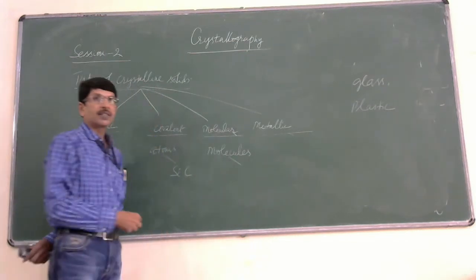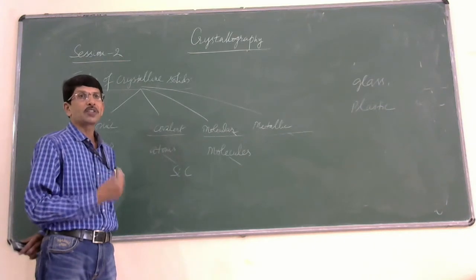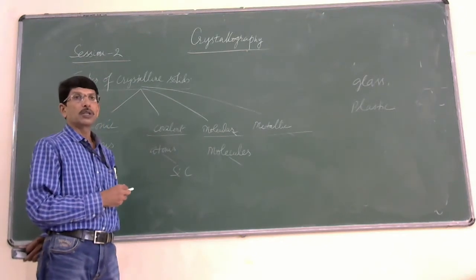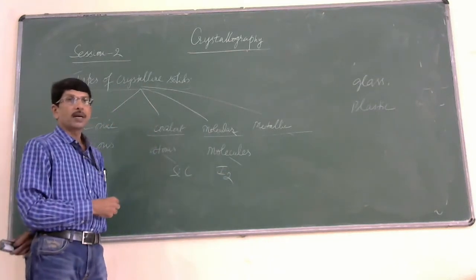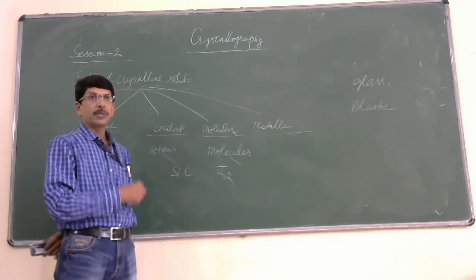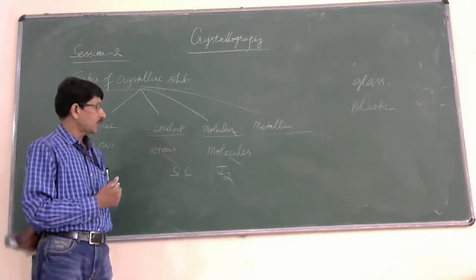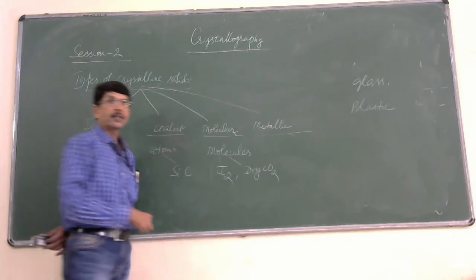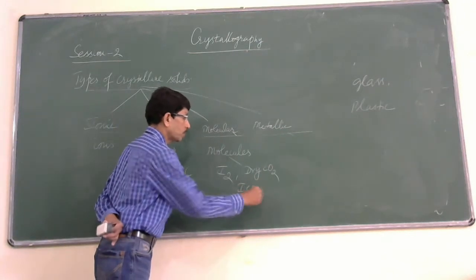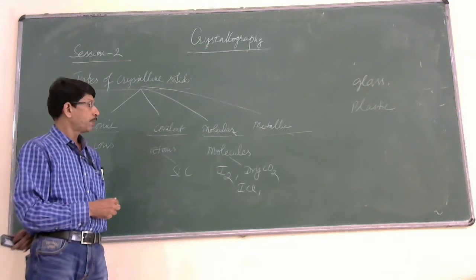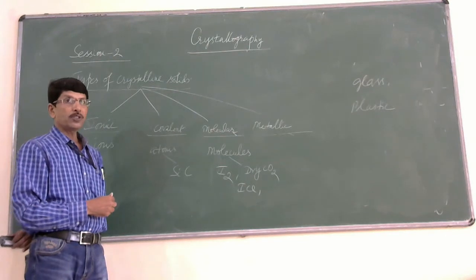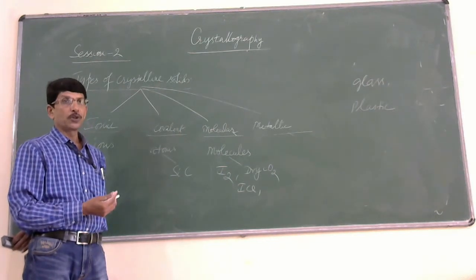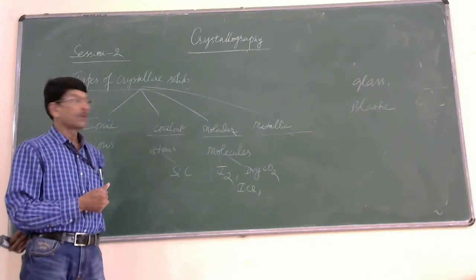The third category of crystalline solids are molecular crystals or molecular solids. As the name itself indicates, the constituent particles of molecular solids are molecules. A simple example is iodine — iodine is the only halogen present in the solid state; bromine is in liquid state. So iodine is an example of a molecular solid. Even dry ice, which is solid carbon dioxide, is an example of a molecular solid. And ice, the solid form of water, is also an example of a molecular solid. The forces of attraction between the molecules are van der Waals forces, or in the case of water, hydrogen bonding.